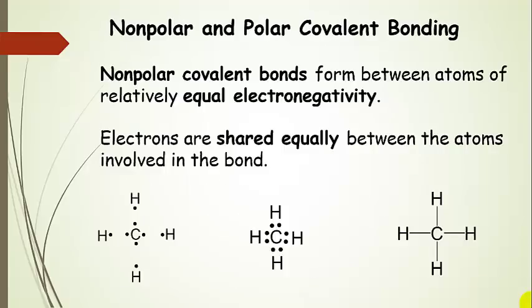Nonpolar covalent bonds are formed between atoms that have relatively equal or the exact same electronegativity. If two atoms of the same element bond together, they have the same electronegativity — that's definitely a nonpolar covalent bond. We also call bonds between carbon and hydrogen nonpolar covalent bonds, even though there is a small electronegativity difference. In these bonds, electrons are shared equally between the atoms, so the electron density is basically very similar.